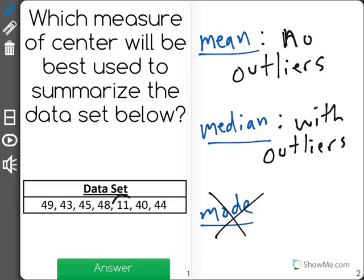Looking at this data set, I can see that I have the number 11 here, which is an outlier, so since it does have an outlier, we will want to find the median so that the mean is not affected and the measure of center is still represented accurately.